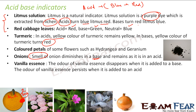Similarly, vanilla essence is an olfactory indicator. The smell is gone if you add base, and the smell remains the same if you add acid. So in both onion and vanilla essence, adding acid has no impact on the smell, but adding base makes the smell disappear.